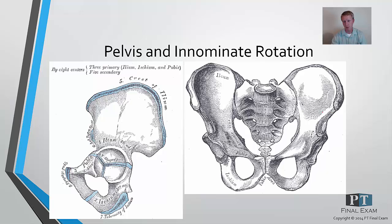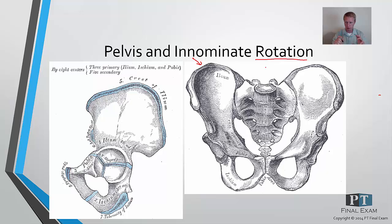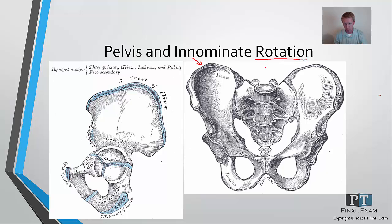Typically we refer to the whole pelvis — both innominates — as the pelvis, and when we're talking about the specific innominates we mean the right and the left innominate. When we're talking about rotation we have two directions: anterior rotation or posterior rotation. If you consider the pelvis like a bowl and tip it anteriorly — dump everything out of the bowl — that's anterior rotation. If you tip it backwards and pull the pubic symphysis upwards, that's posterior pelvic rotation, or posterior innominate rotation if you're moving just one side.